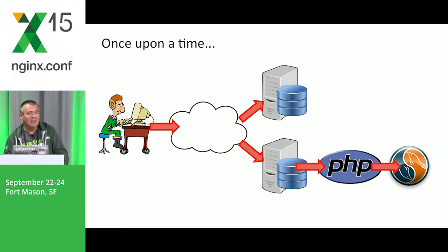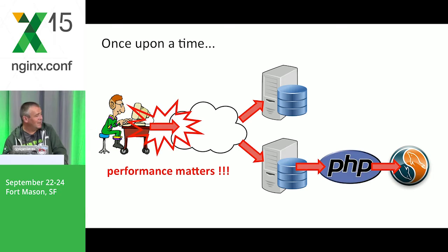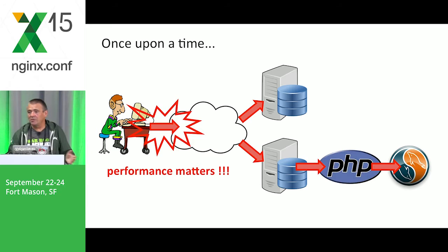But even back in those times, performance already mattered — especially in that part of the application where performance was an issue. When we talked about performance back in those days, it was mainly the dial-up line, how the user was connected to the Internet. So other sections like the web server didn't matter if they were slow, because the dial-up connection was slower anyway. No one cared if the database was too slow either.